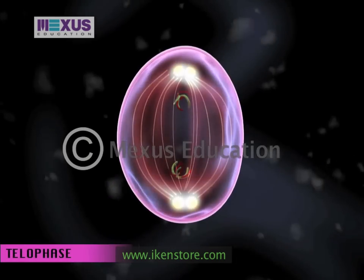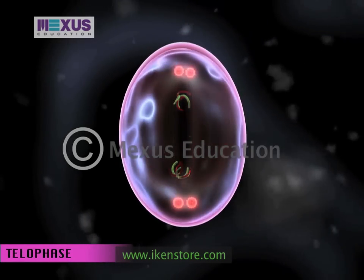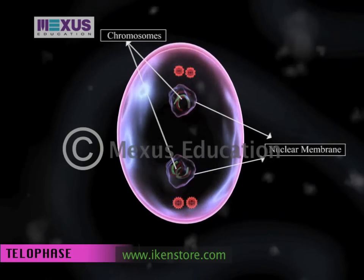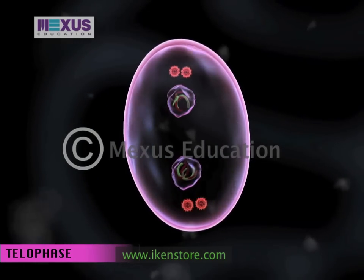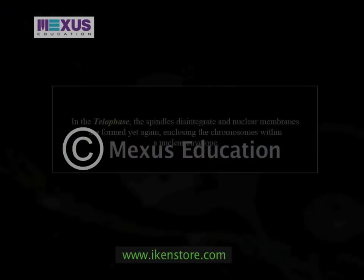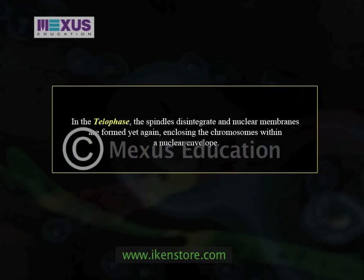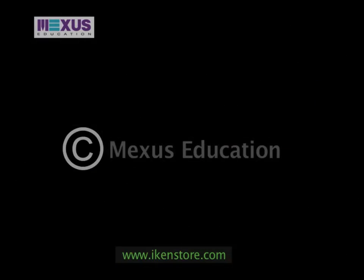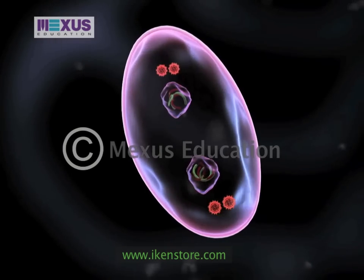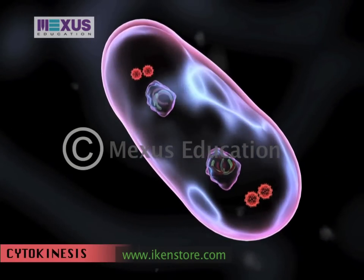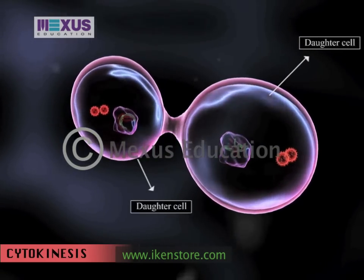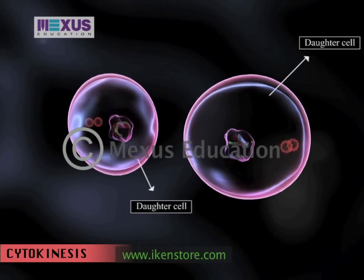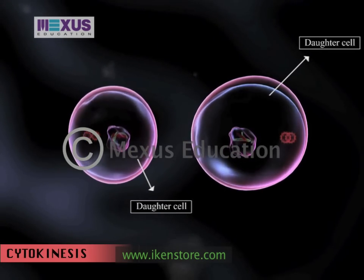In the telophase, the spindles disintegrate and nuclear membranes are formed yet again, enclosing the chromosomes within a nuclear envelope. Cytokinesis then takes place, during which the cytoplasm divides in order to form two daughter cells. Each cell contains the same number of chromosomes.